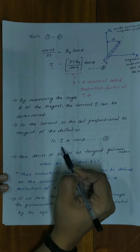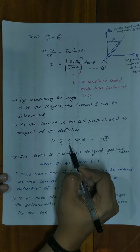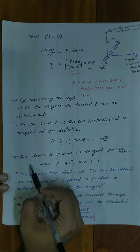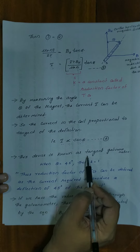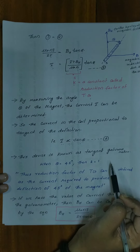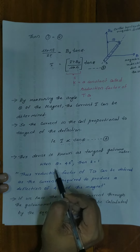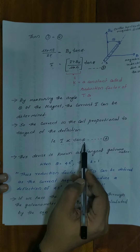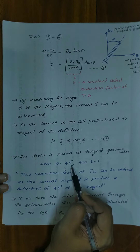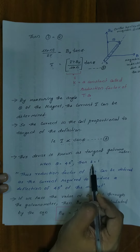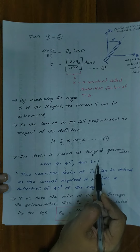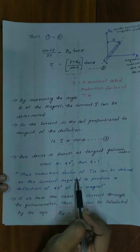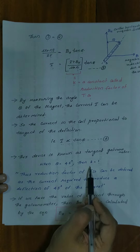Therefore, I is equal to a constant into tan theta, meaning I is proportional to tan theta. This device is known as the tangent galvanometer. When theta is equal to 45 degrees, tan theta equals 1, and the constant equals the reduction factor K.